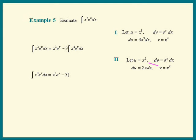uv is x squared e to the x minus the integral of v du. Pull out the 2 and we have the integral of x times e to the x dx.